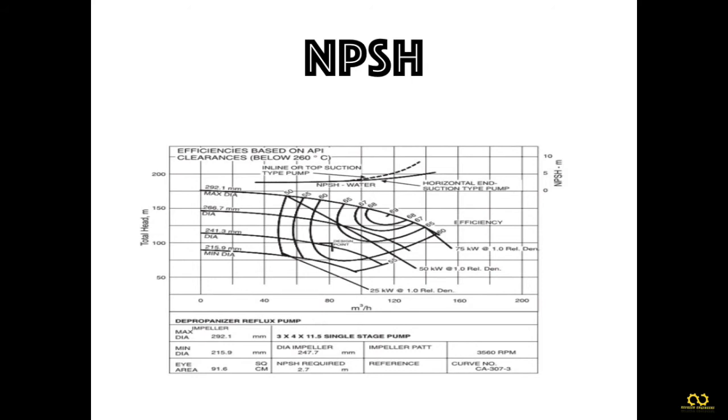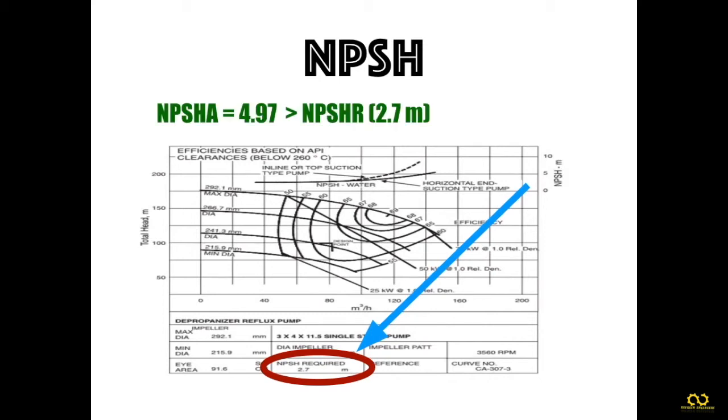Here the given NPSHR, the net positive suction head required, is 2.7 meters. The available net positive suction head is 4.97. Is it okay? Yes, there is no cavitation. Cavitation can be avoided because the value is greater than 2.7 meters, so the pump is running without cavitation.